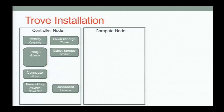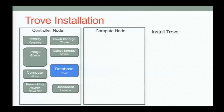How does Trove install and set up into OpenStack? You have your controller node and compute node. The obvious installation method is apt-get or RPM, and it basically drops right into your controller node. Configuration is like many OpenStack services — there are config files to edit, but one major part is the creation of guest images. There's a guest image for each datastore version, so you'd have one for MySQL 5.5, and that lives inside Glance.